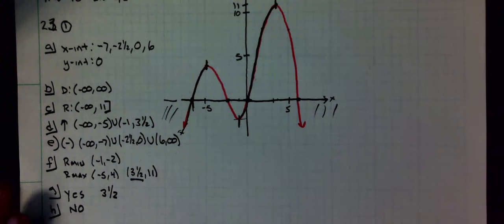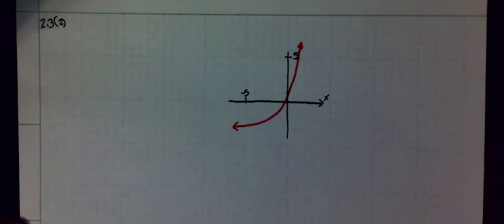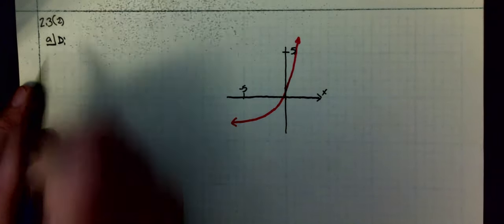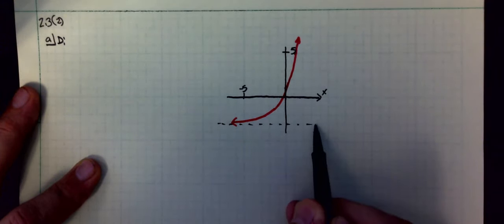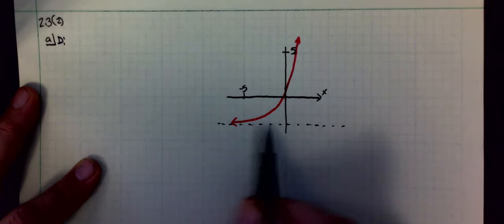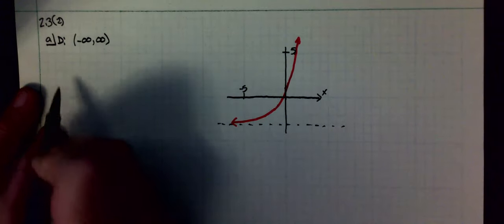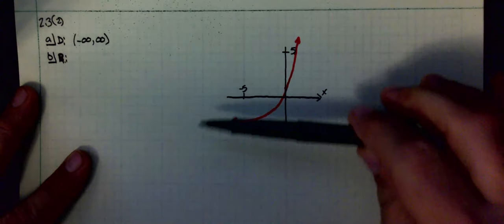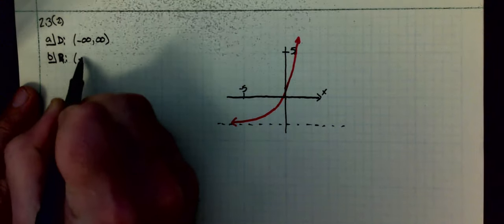We'll do problem number 2. First thing it asks is for the domain of the function. Domain of the function is all real numbers. I'm just drawing in a horizontal asymptote here. The domain is all real numbers, negative infinity to infinity. Part B: they wanted the range of the function. The range of the function is from negative 3 to infinity for my horizontal asymptote, and it doesn't touch it, so round bracket on negative 3.